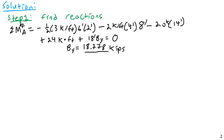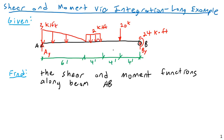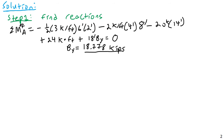Rather than using a sum of forces to find AY, I'll take a sum of moments about B as an independent calculation, since BY has no moment arm about point B. That way I'll have two independent equations and can use the sum of vertical forces only as a check to make sure I don't get the reactions wrong.